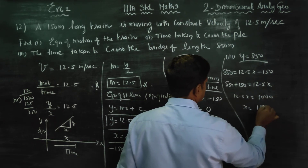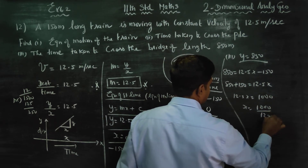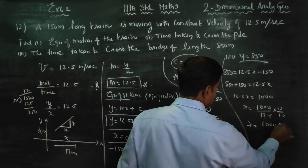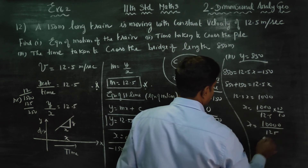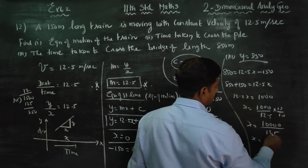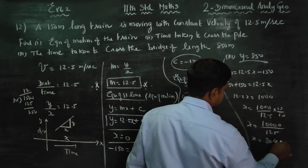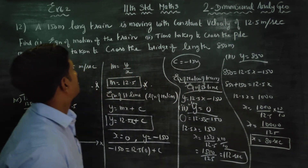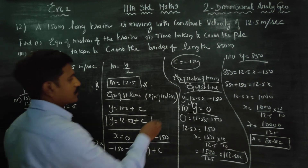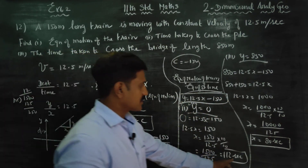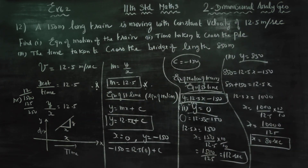850 plus 150 is equal to 12.5x. So 12.5x is equal to 1000. x is equal to 1000 divided by 12.5, which is 10,000 by 125. x is equal to 80 seconds. This is the equation of motion answer. The answer for this sum is 80 seconds. Thank you.